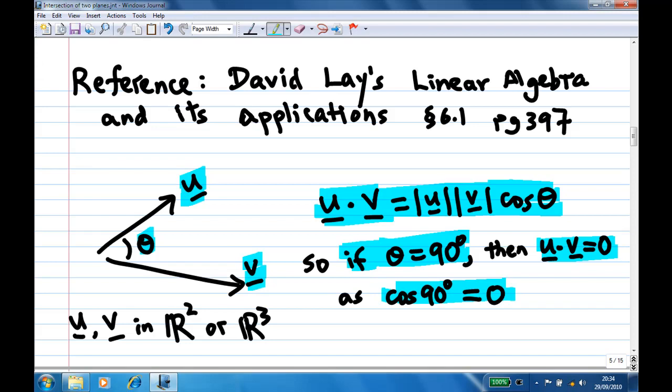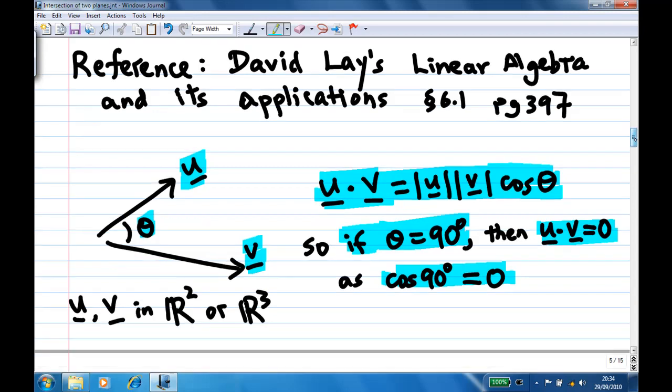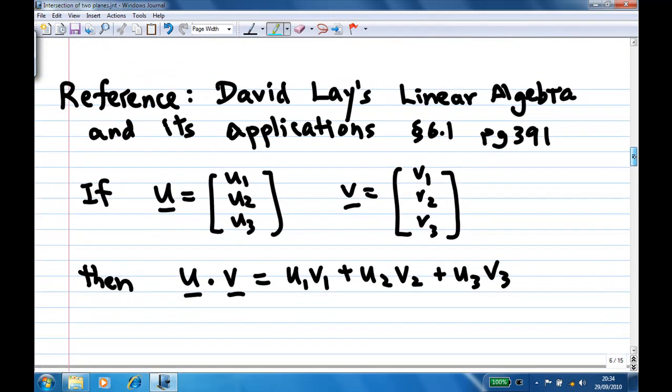This is the part on the geometry. There is also another algebraic approach of dot product, which you can find in David Lay's page 391. This is an algebraic approach. If u is u1, u2, u3 and v is v1, v2, v3, then u dot v is u1 v1 plus u2 v2 plus u3 v3. And this is another way to find the dot product.